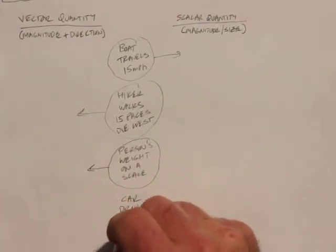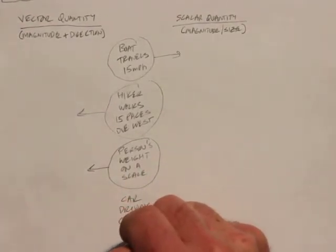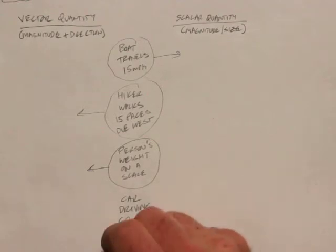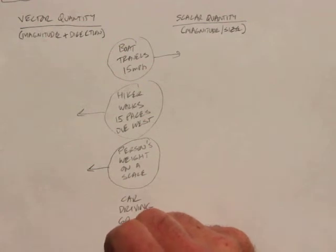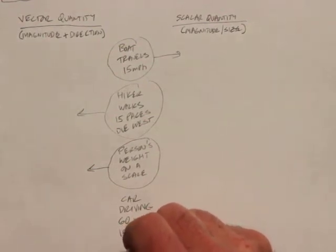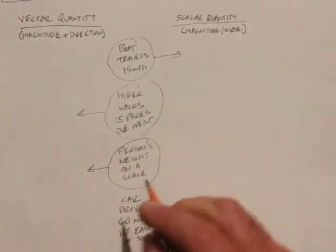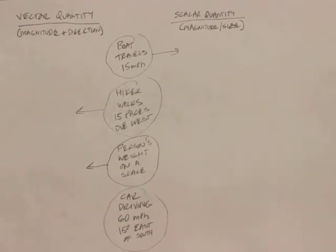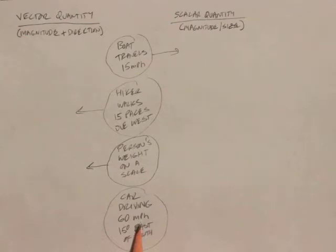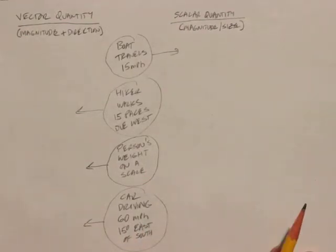A car driving 60 miles per hour, 15 degrees east of south. Here again we have a car driving at a certain magnitude — 60 miles per hour — in a specific direction. We've got a vector again.